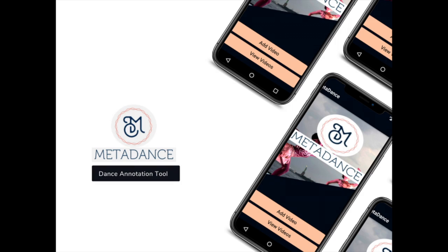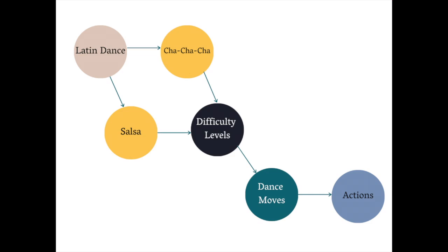The annotation tool was developed as a mobile platform, as the project brief stated that the implemented solution be easily accessible within a social dance setting. Therefore, a mobile application would work better in such a situation. The dance terms collected through web scraping and natural language processing were used to develop the dance ontology implemented within the annotation tool. Only dance terms for salsa and cha-cha-cha were collected to demonstrate the reusability of the method used to collect dance terms.